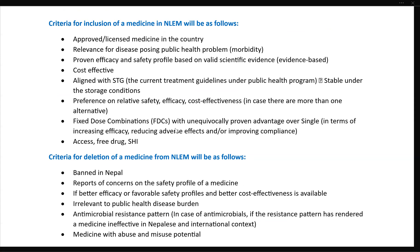The essential medicine list criteria require that the medicine is approved or licensed in the country — Nepal and DTA. The disease must be causing a public health problem affecting most of the population with morbidity and relevance. Rare disease medicines may also be included. Medicine must be safe, efficacious, and evidence-based, as well as cost-effective, following standard treatment guidelines, with stable storage conditions.